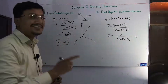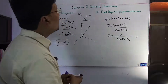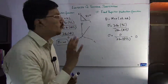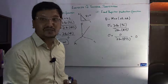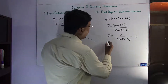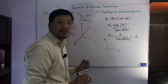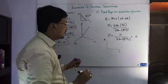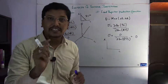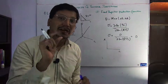Now we are discussing the fixed proportion production function. In the fixed proportion production function, we have a two-good case with L and K. The production requires that labor and capital will always be used in a specific, fixed proportion.